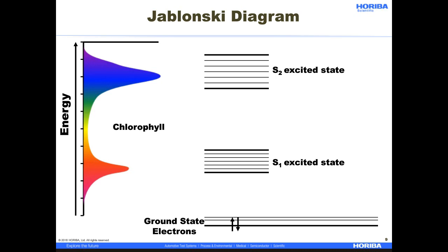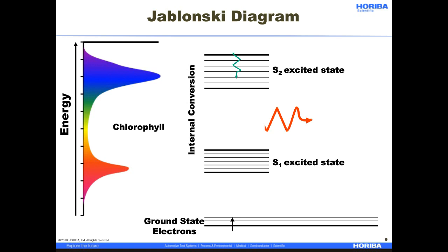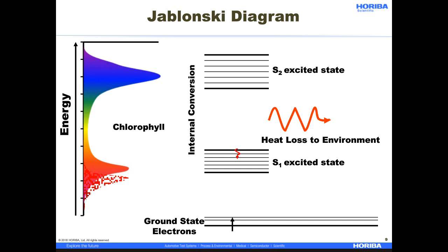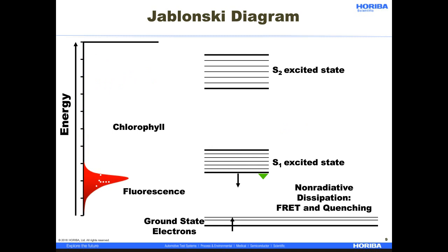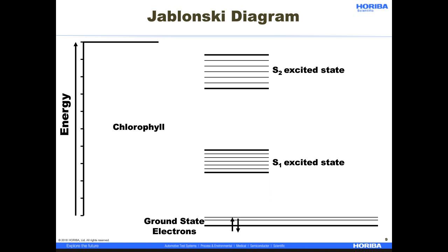This is the Jablonski diagram. The left axis shows increasing energy where a typical fluorescent molecule — chlorophyll, for example — has an absorbance spectrum. This spectrum shows the energy or wavelengths where the molecule will absorb light. If we use an incident wavelength where the molecule will absorb the photon, the molecule is then excited from the electronic ground state to a higher excited state, denoted S2 in this case. The electrons then go through internal conversion, affected by vibrational relaxation and heat loss to the environment. A photon is then emitted from the lowest lying singlet excited state in the form of fluorescence. In conventional fluorescence, photons are emitted at higher wavelengths or lower energy than the photons which are absorbed. This diagram is extremely important to understand for any fluorescent spectroscopist.